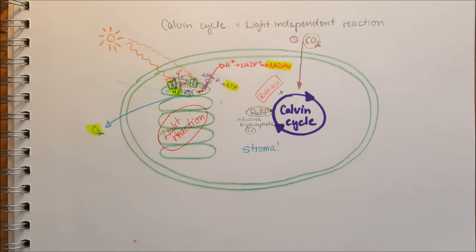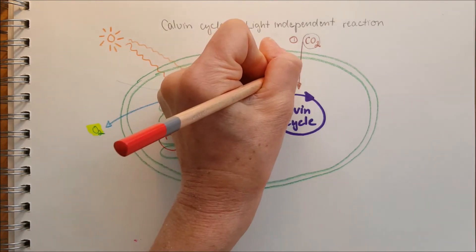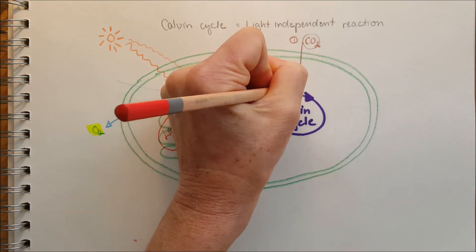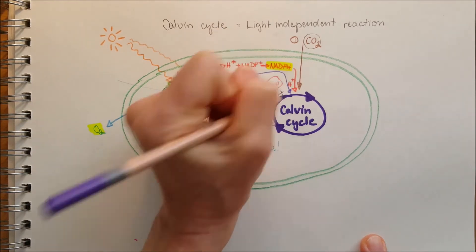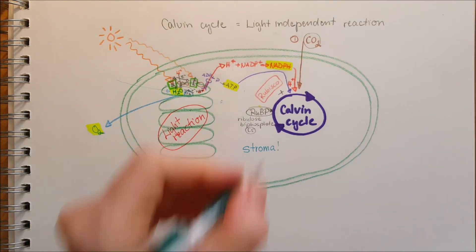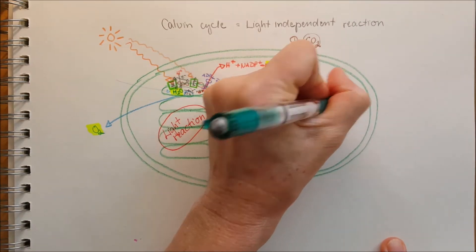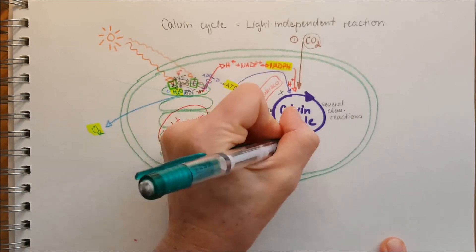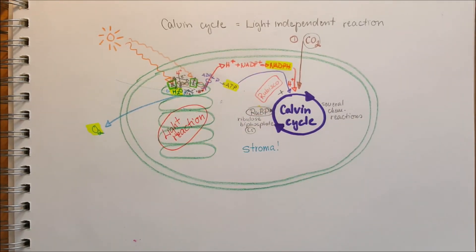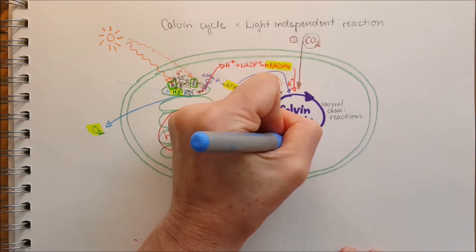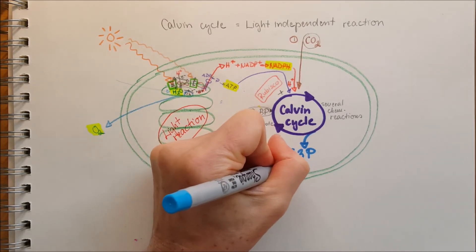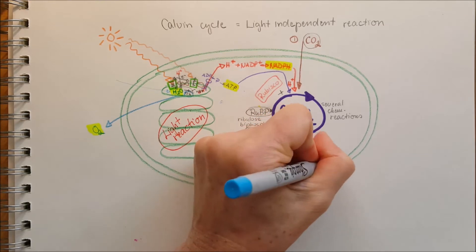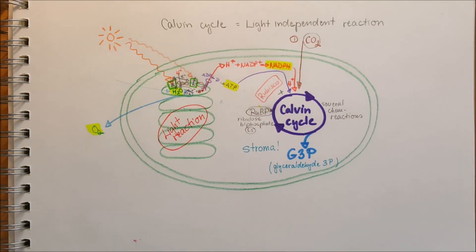The ribulose bisphosphate binds with carbon dioxide — this is carbon fixation. Since RUBP is a five-carbon molecule, adding one carbon from CO₂ forms a six-carbon intermediate that immediately splits in half, forming two molecules of 3-phosphoglycerate, also known as glyceraldehyde-3-phosphate.